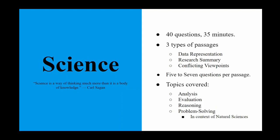Finally is the science section. This is 40 questions and 35 minutes long. There are three types of passages: data representation, research summary, and conflicting viewpoints. There are five to seven questions per passage, and the topics covered include analysis, evaluation, reasoning, and problem-solving in the context of natural science.